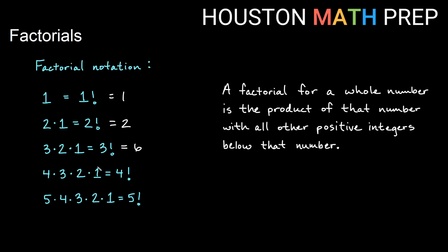Four times three times two times one — so four times the previous value six — gives us 24. And then five factorial: I'm just taking my four factorial and multiplying by five, so taking 24 multiplied by five gives me 120. Those are just some values for the first few of these.